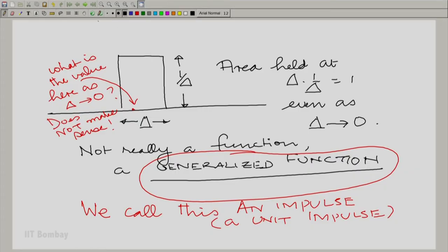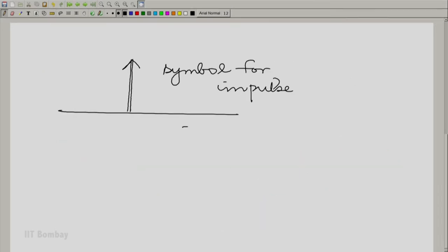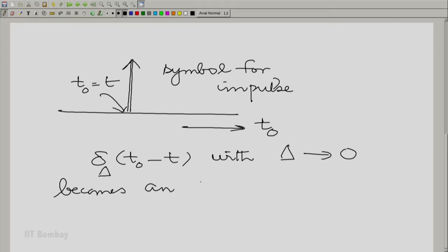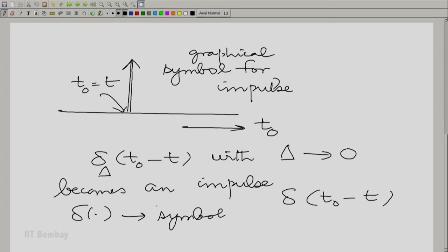And we have a symbol for it. The symbol that we are going to use is this. So going back if you call the indexing variable t0 and if this point is t0 equal to t then delta delta t0 minus t with delta going to 0 becomes an impulse. This is of course, the graphical symbol that we have used here. And this is the algebraic symbol for an impulse.